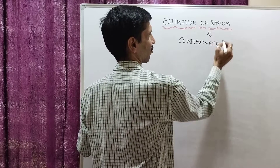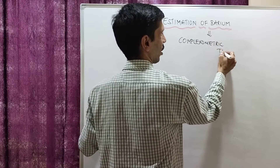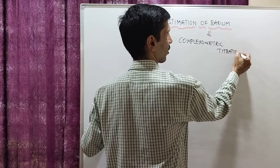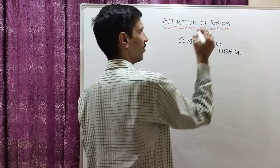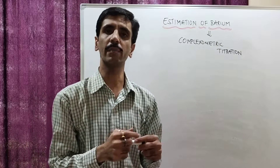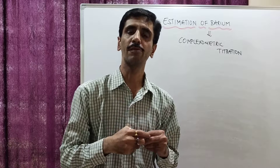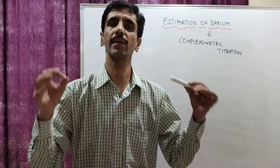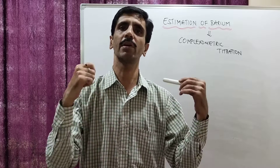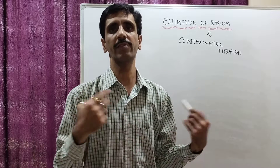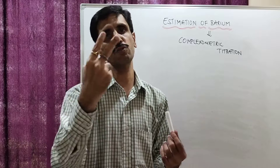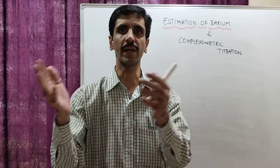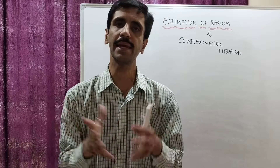When we talk about complexometric, the first thing which comes to your mind is the formation of a coordinate covalent bond. When we talk about the formation of a coordinate covalent bond, we require two species: one is the metal, and the other one is going to be the ligand.